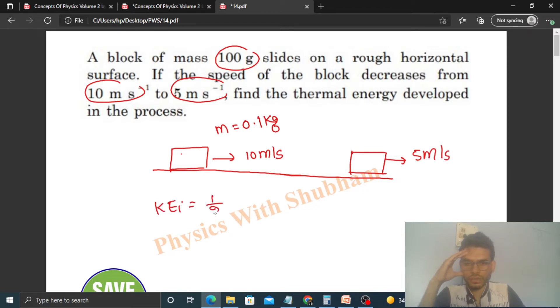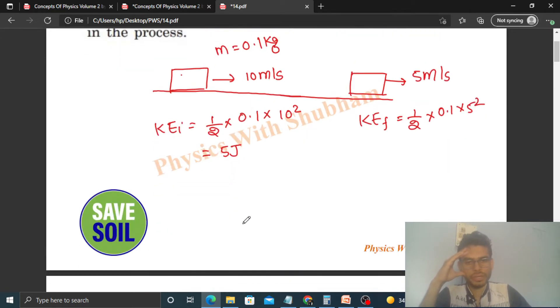Initial kinetic energy is half mass into speed squared, so that is 5 joules. Final kinetic energy is half mass into speed squared, so this will be 1.25 joules. You can see the kinetic energy has decreased.